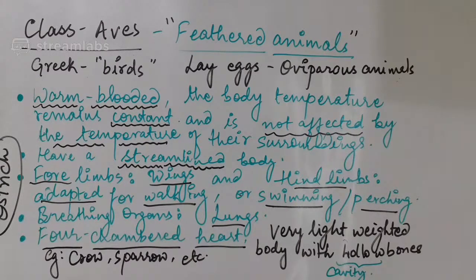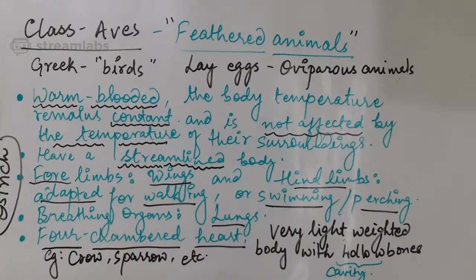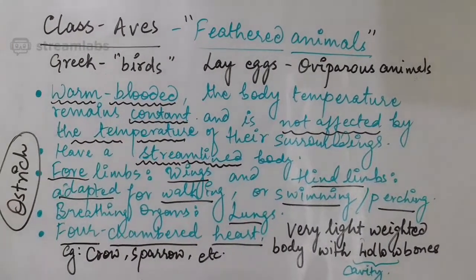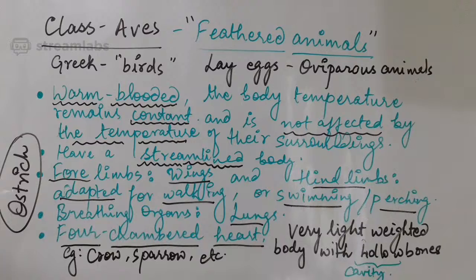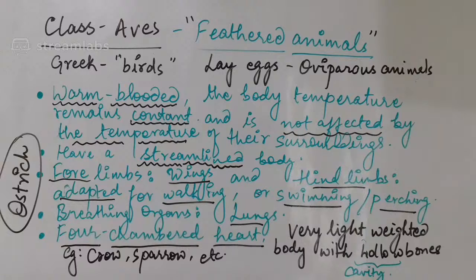Any bird you can see — parrot, duck, crow, parakeet, etc. — are examples of this class. All animals whose body is covered with feathers belong to this class. You can keep these examples in mind for questions like odd-one-out, match-the-column, or fill-in-the-blanks. These are the important characteristics for this class. There are four to five main characteristics in every class of the vertebrates we have studied.